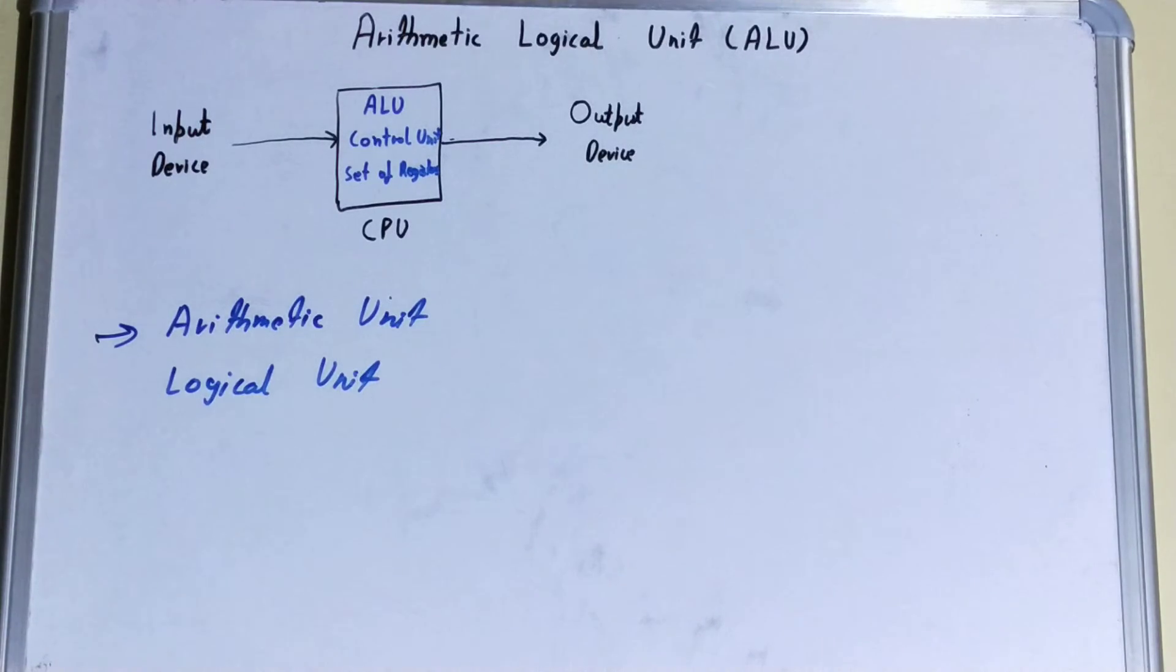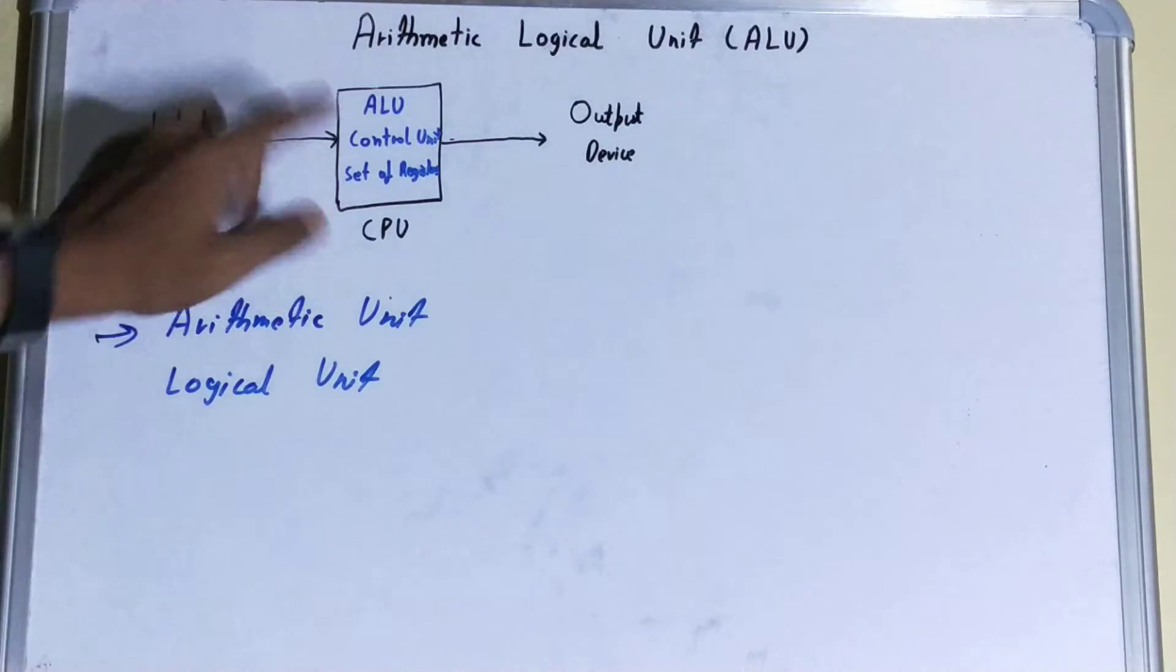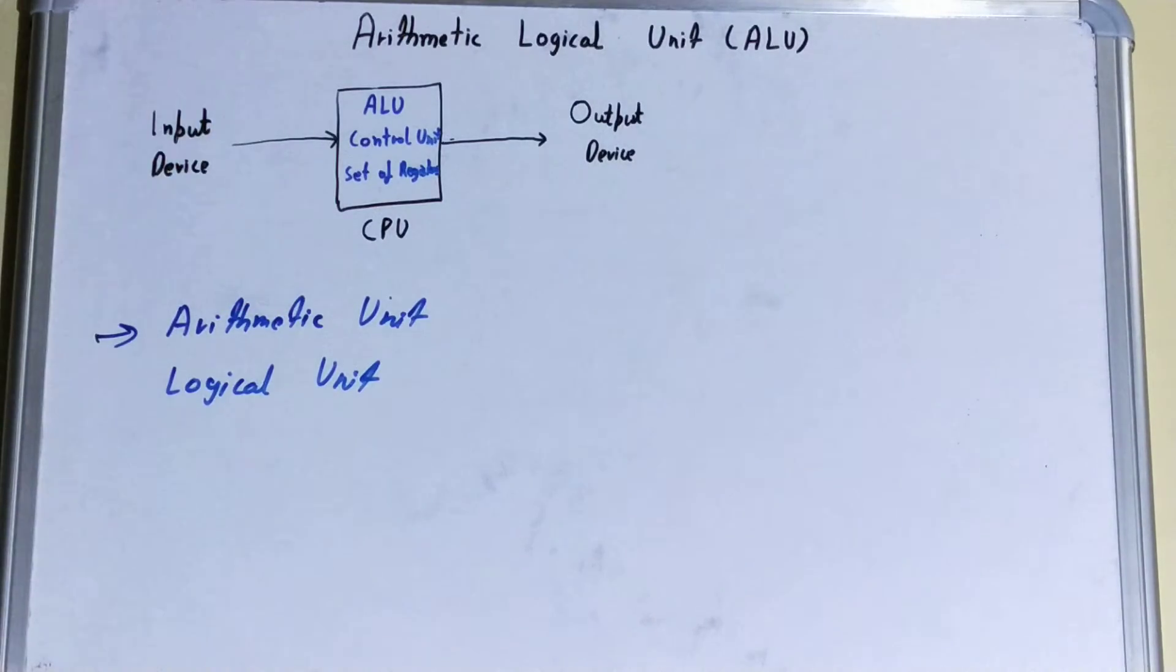It's just like a cashier having that paper where he can write everything so that he doesn't forget. In the same way, the set of registers does the same work. The Control Unit actually controls the flow of execution - in what way things are going on.